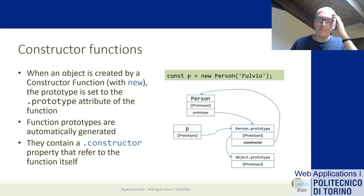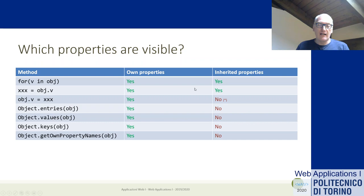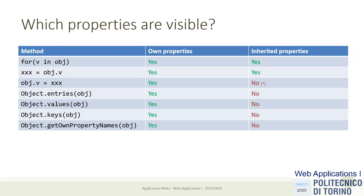To summarize: we distinguish between own properties and inherited properties — properties defined on objects higher in the prototype chain. When iterating with a `for...in` loop, the iteration covers own properties and also goes up the prototype chain searching for enumerable properties. However, `Object.values()`, `Object.keys()`, `Object.entries()`, and `Object.getOwnPropertyNames()` only navigate the local — own — properties of an object.